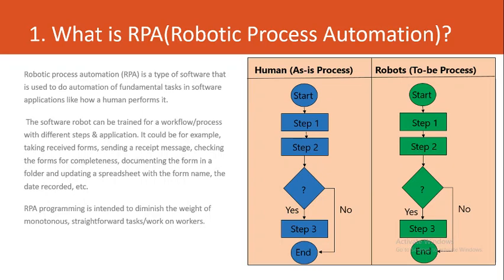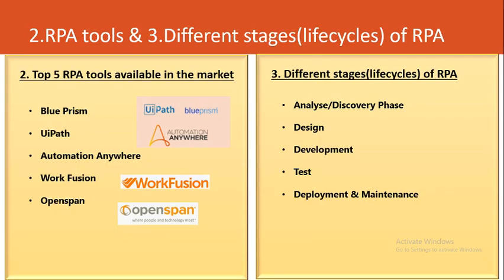This is also a frequently asked question. Number two: what are the top five RPA tools available in the market? And number three: what are the different stages of RPA? Moving to question number two — there are more than twenty to thirty RPA tools available in the market, but the top five are UiPath, Blue Prism, Automation Anywhere, Workfusion, and OpenSpan.